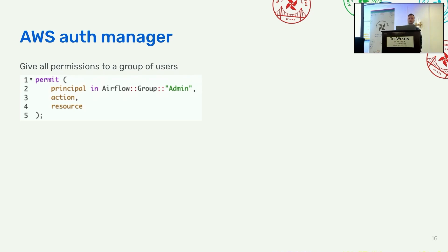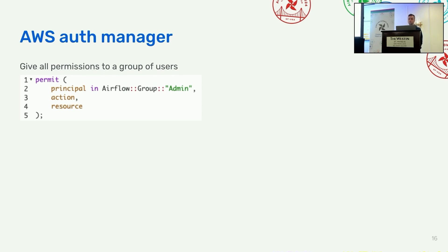In Cedar, you have basically three lines. The first is the principal — the who. The second is the action — what kind of action the user is doing, such as read DAG, create connection, delete variable. The third is the resource — what resource the user is trying to access. As a first example, we want to give all permissions to a group of users. We say the principal is in Airflow group admin — meaning any user that belongs to the group admin. We don't set any constraints on action and resource, so we allow everything. Any user in the group admin can do any action on any resource.